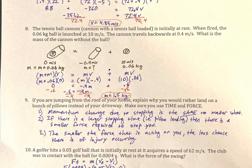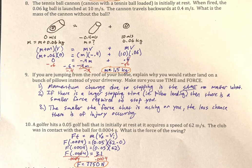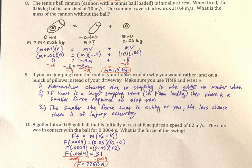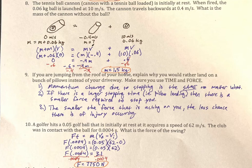Problem eight: the tennis ball cannon. It is initially at rest, and when fired the ball is launched at 10 m/s. The cannon travels backwards, and we need to find the mass of the cannon without the ball. To begin with, cannon and tennis ball are together — masses combined, both traveling at the same velocity (zero). After the interaction — which is an explosion, literally something blown out of the cannon — each gets its own momentum.